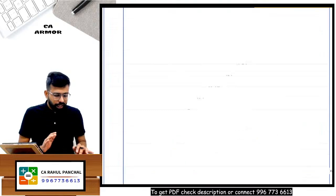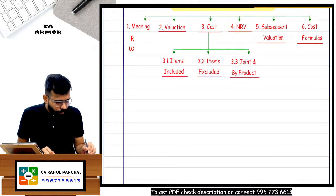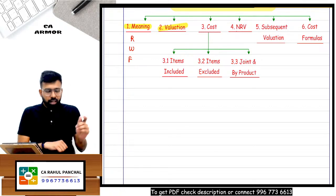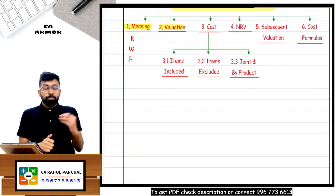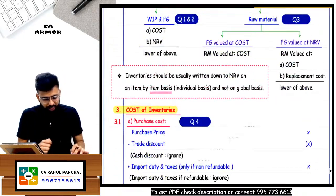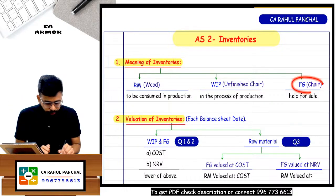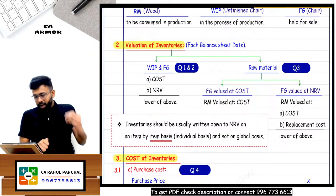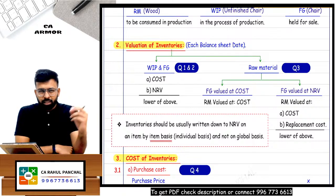We have understood the meaning — three parts: raw material, WIP, and finished goods. The next part is valuation of inventory. How will you value the chair lying in your godown, since it will be shown in the P&L and balance sheet? Here we use the conservatism principle.